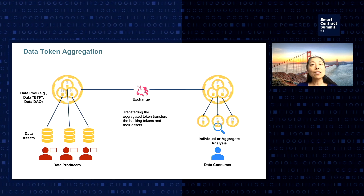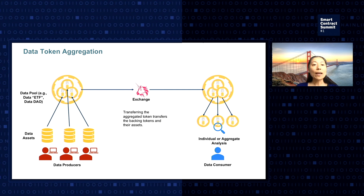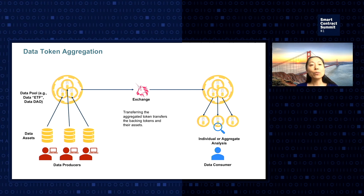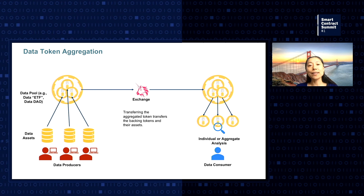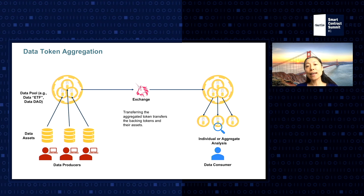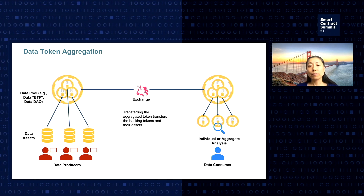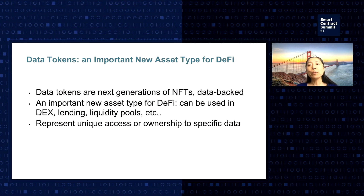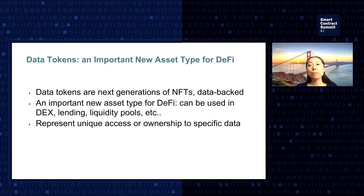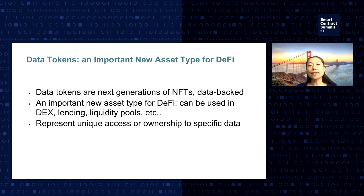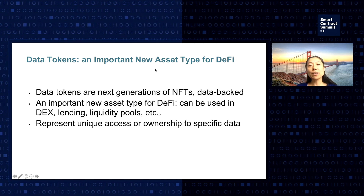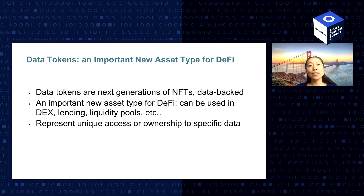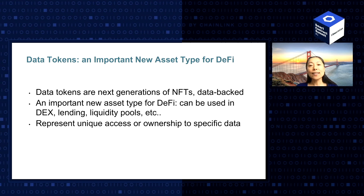Also with these data tokens, we can further enable data token aggregation, so from individuals' data assets they can join data pools to form, for example, data ETFs and data DAOs, and these data pool tokens can then be exchanged as well. Overall, data tokens establish an important new asset type for DeFi. Data tokens are the next generation NFTs — in particular, data-backed NFTs. They can be used in different types of DeFi applications such as index funds, lending, liquidity pools, and so on, and they represent unique access ownership to specific data.